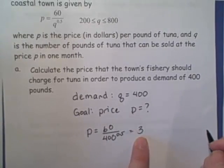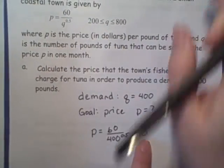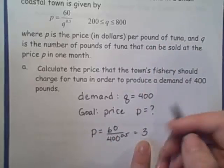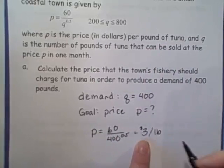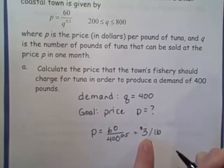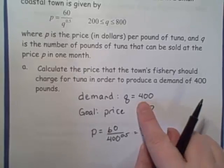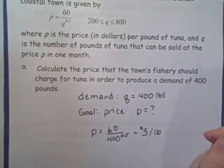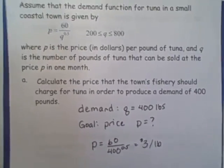Okay, so now what are the units on this P? Well, if we look back up here, it says P is the price in dollars per pound of tuna. So this tells us that our price is $3 per pound. If the cost or the price for the tuna is $3 per pound, the demand will be 400 pounds.